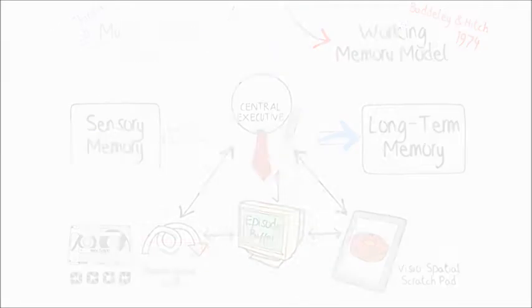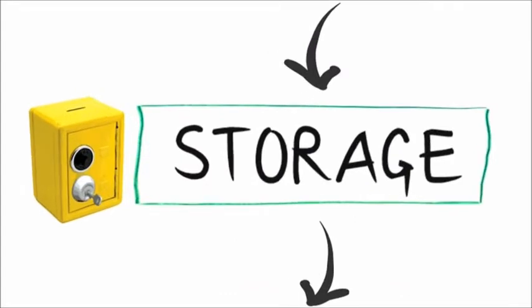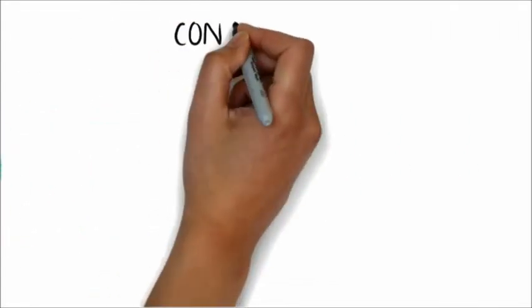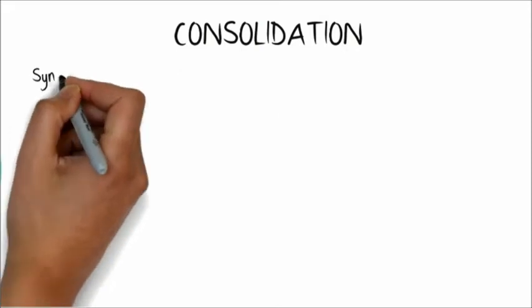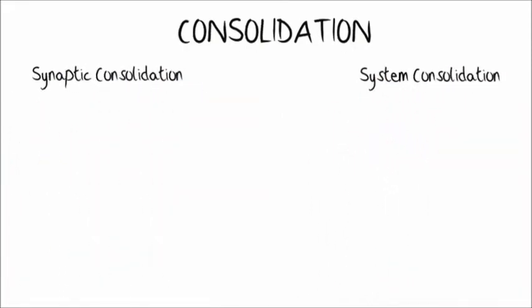Once stimuli have been encoded into memories, they must be stored permanently, and the first step to accomplish it is consolidation. It is divided into two different processes: synaptic consolidation and system consolidation.